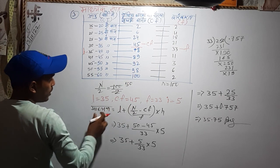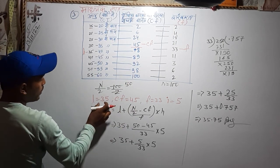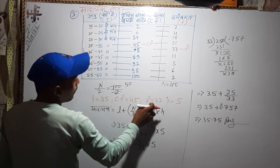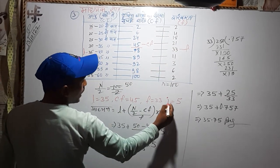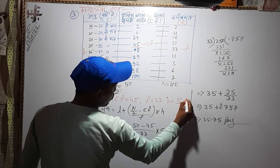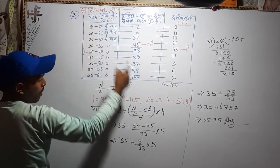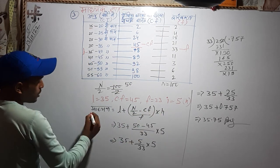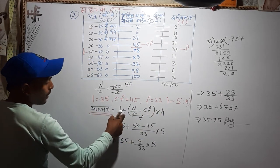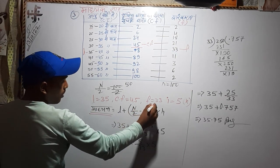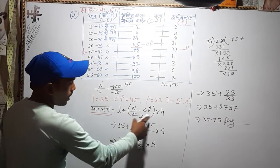Now, what do we see here? We see here L, 35. C, 45. F, 33. I or H, 5. Now, this is the formula: L plus N by 2 minus C F by F into H. Is it the value? 35.